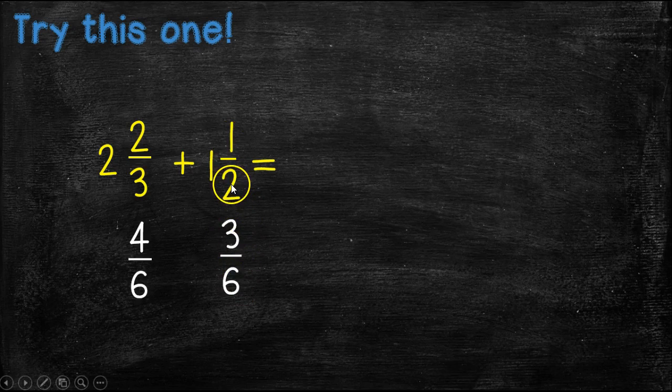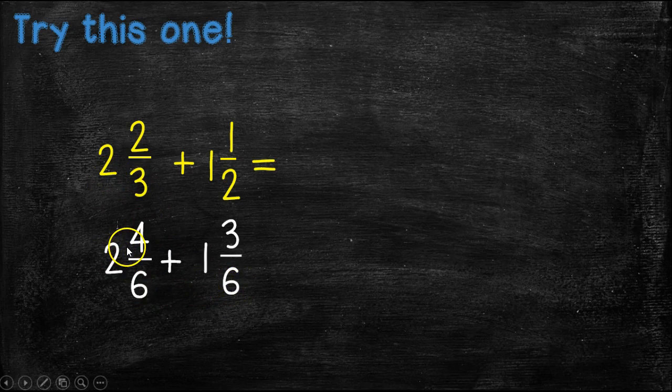So in this case, what did we do to two to get six? Well, we multiplied it by three, so we do the same thing to the numerator. Three times one is three. Over here, to make this three a six, we had to multiply it by two, so we're going to do the same thing with our numerator, and two times two is four. So now we have equivalent fractions, and we need to bring down our whole numbers.